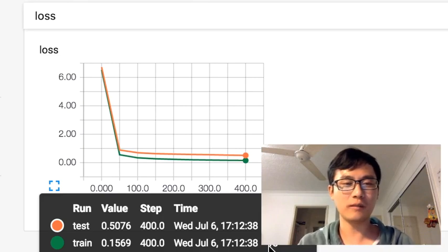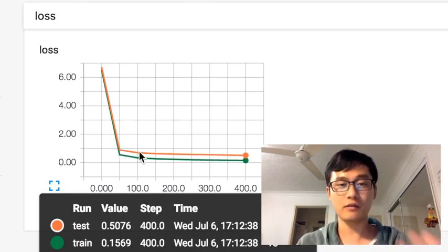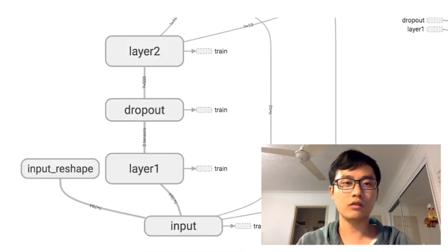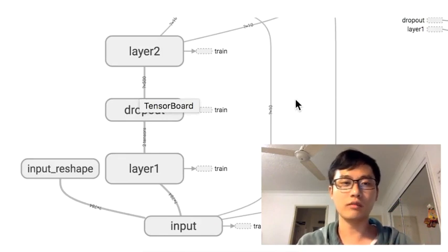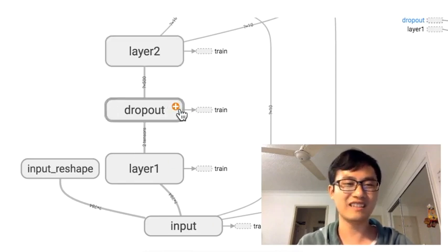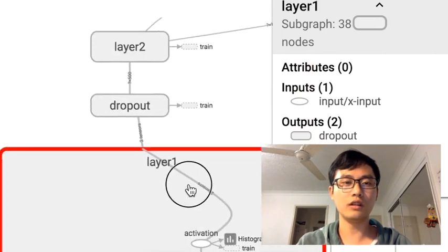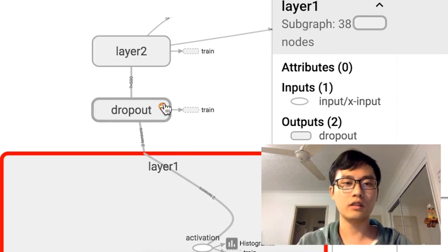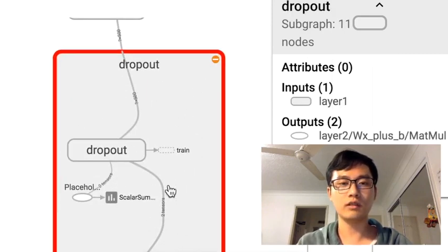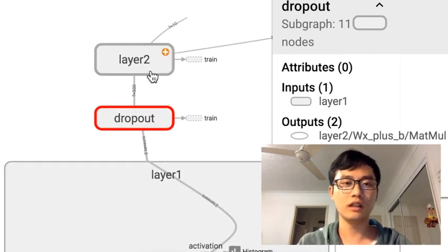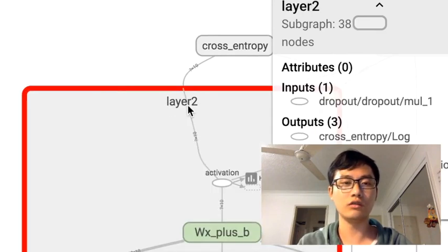We have an overfitting problem at this moment. We can use the dropout function to drop out some of the results and overcome the overfitting problem. If you're interested in what dropout is, you can Google it for a better understanding, but it's out of scope for this tutorial. After outputting the activated values from layer one to layer two, I'll add one dropout process to drop out some probability of the results — for example, 50% — and then pass the remaining values to layer two.